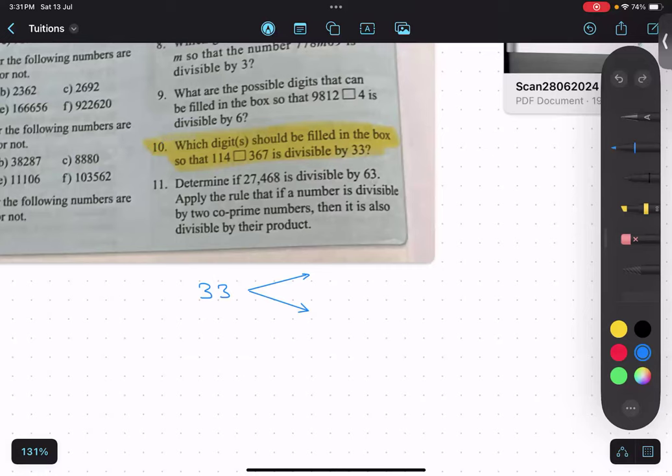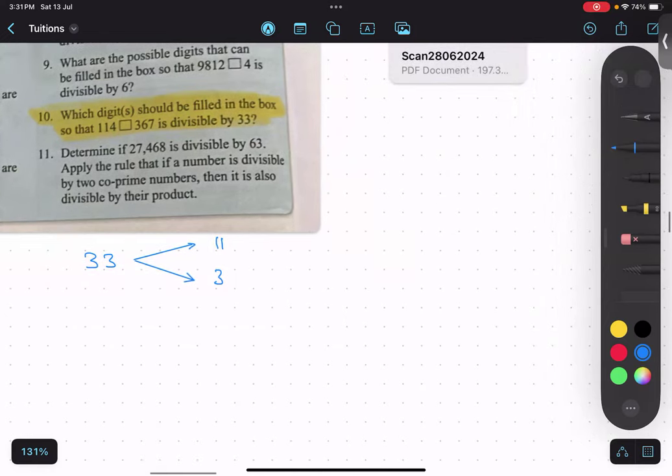So the divisibility rule of 33 is 11 and 3. With 11 and 3 it should be divisible. So the number is 114 box 367. Let's do it for 3 first of all. 3 is easier.